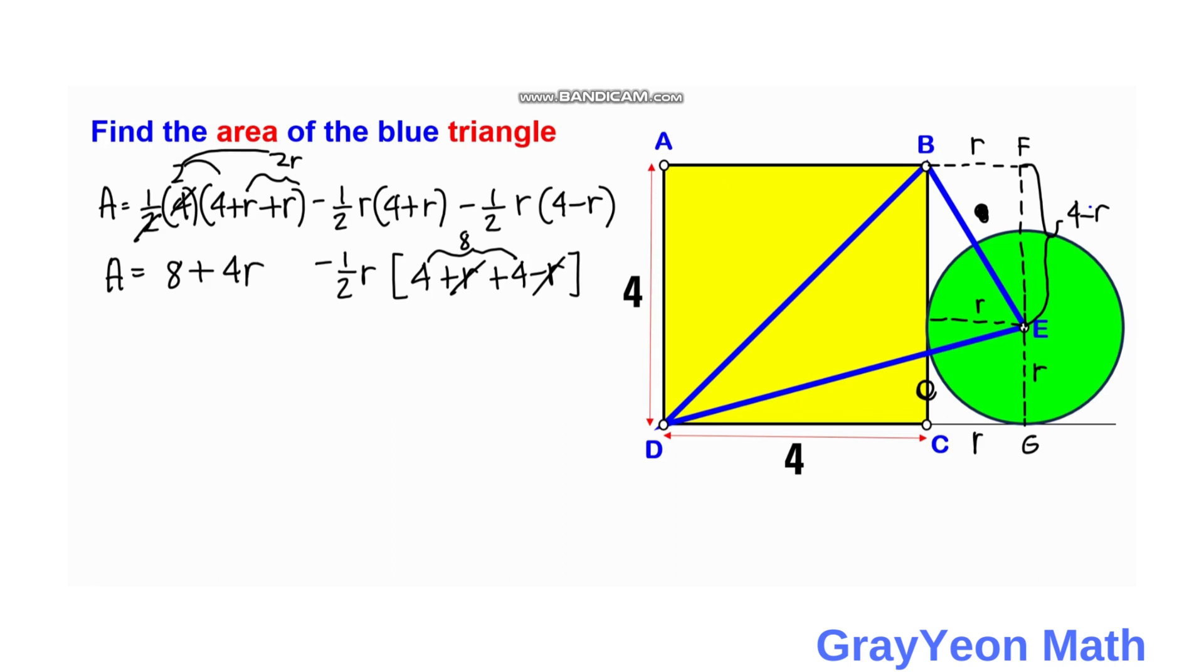So simplifying that, this becomes 4R. This becomes 4, 8 divided by 2 is 4. So we are left with 8 plus 4R minus 4R, and this cancels out. And we have the area equal to 8 square units.